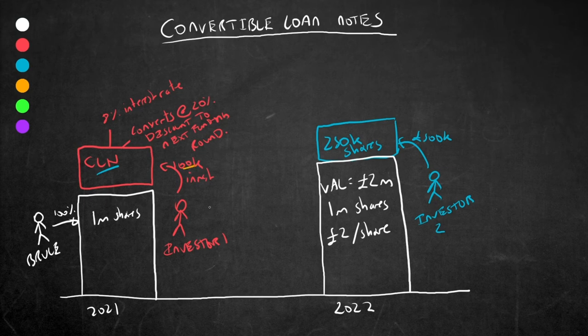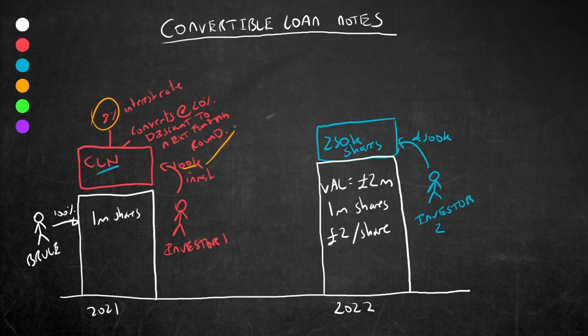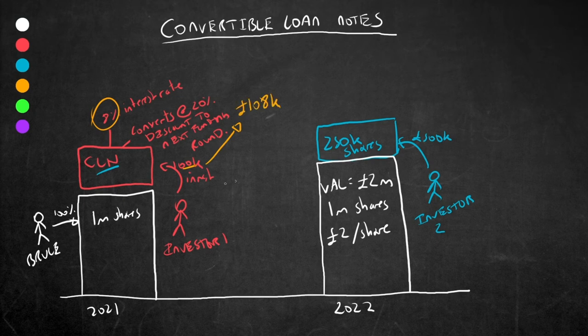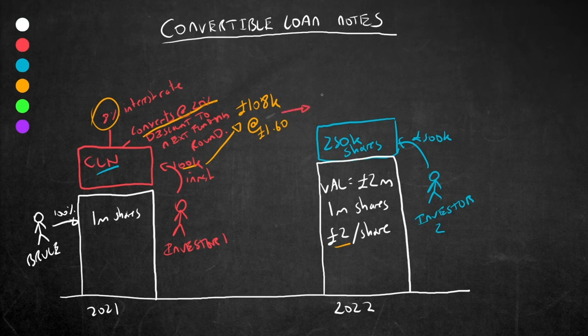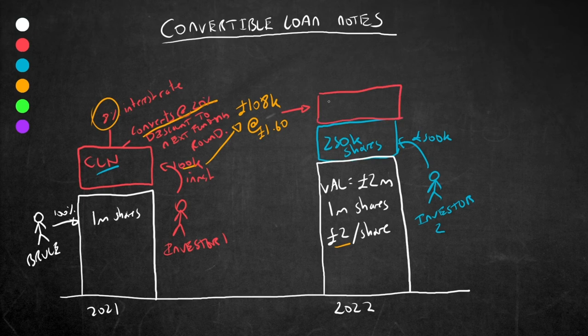This original 100,000 pound investment, remember, incurs 8% interest a year. And so a year later in 2022, that 100,000 is now 108,000 pounds of debt. This then converts into equity at a 20% discount to the valuation or share price. And 20% discount of 2 pounds a share is 1 pound 60 a share. So now he's only paying 1 pound 60 a share instead of 2 pounds a share, which gives investor 1 67,500 shares.